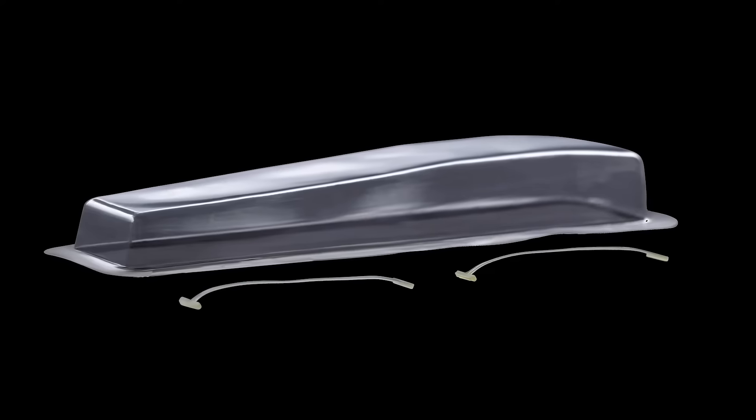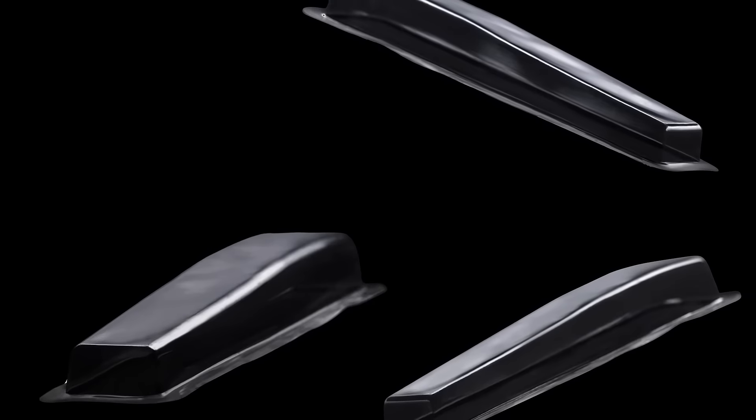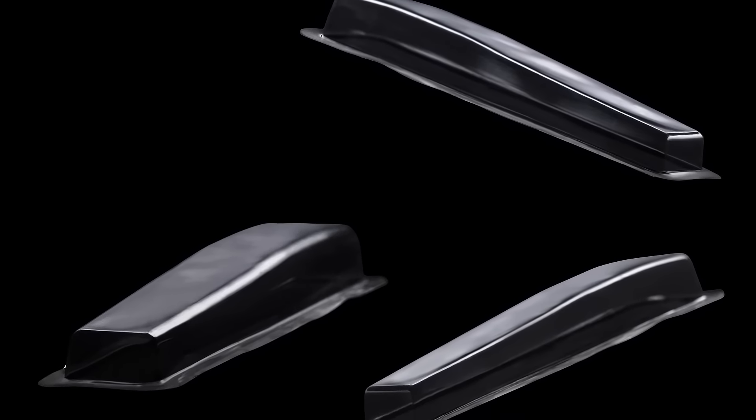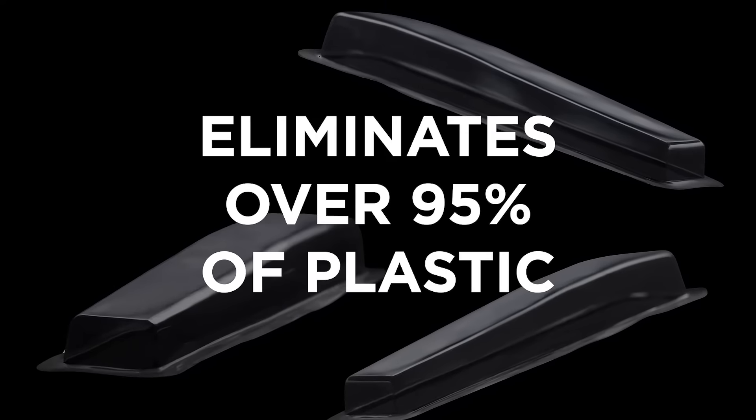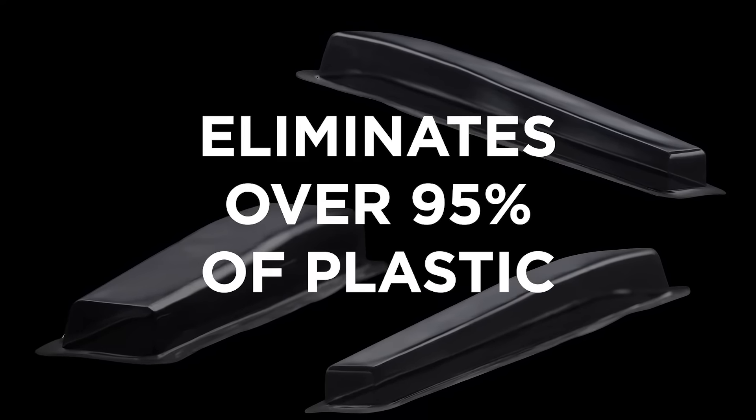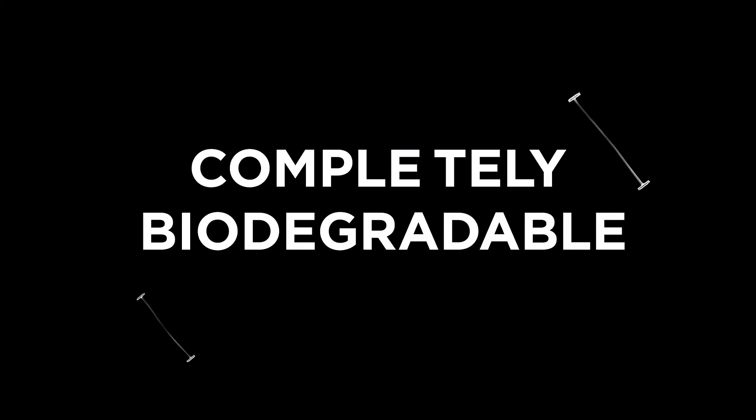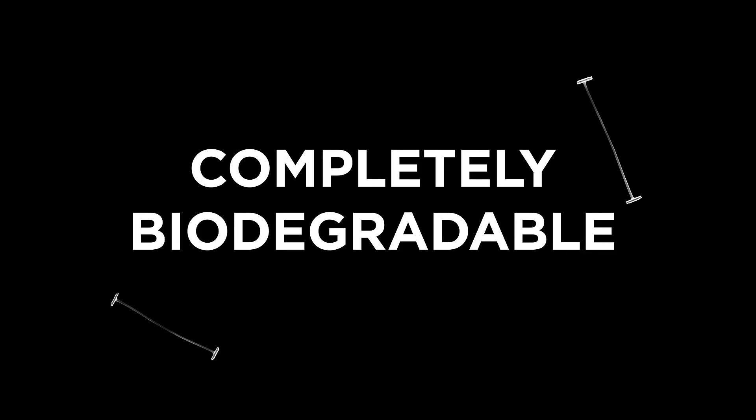Not only does this system cut down on costs, it also cuts down on waste. Without the need for blister packs, the MatPT eliminates 95% of plastic used in the packaging process. In fact, our elastic staples are biodegradable, ensuring a finished product that's significantly easier on the environment.